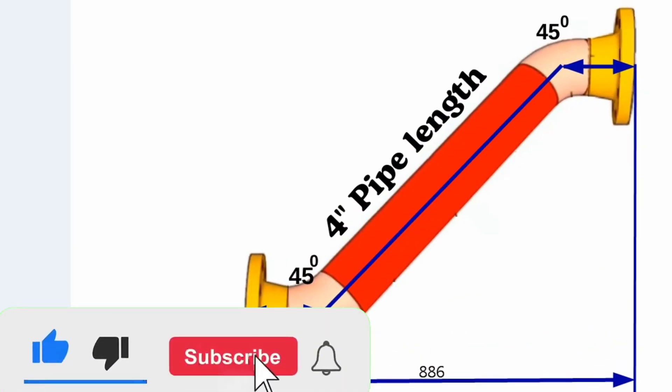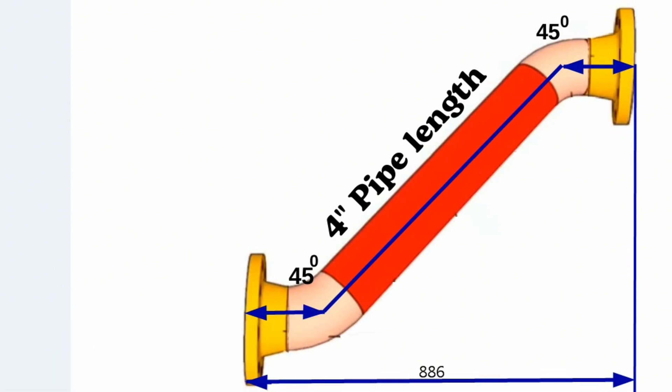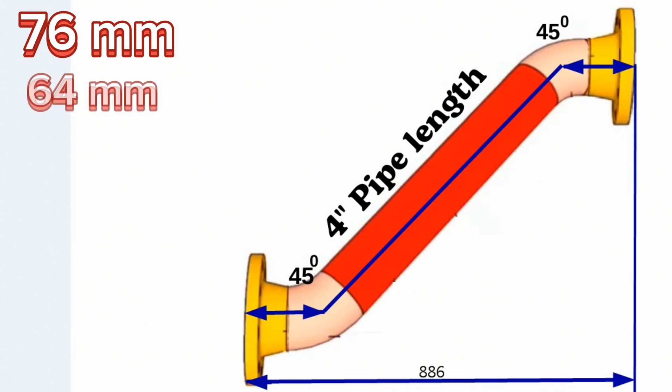We already know flange and elbow sizes and can calculate this distance. 4-inch weld neck flange size is 76 millimeters. 45-degree butt weld elbow size, the center to end, is 64 millimeters.